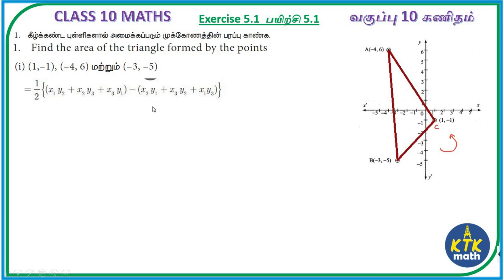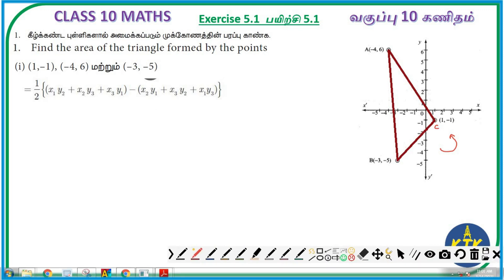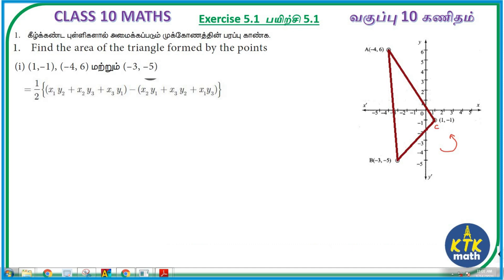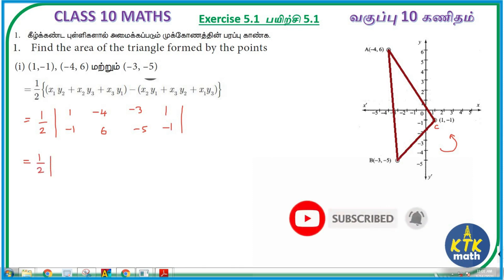Now, the formula for area of triangle - the left side is area of triangle. So we write the coordinates: (1, -1), then (-4, 6), then (-3, -5), and then again the first point (1, -1) to close. Now let's do the multiplication. So we have 1 times 6 which is 6, plus (-4) times 5 which is -20, plus (-3) times (-1) which is 3. Be careful with negative and positive symbols.